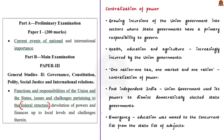For the past few years there have been growing incursions of the union government into sectors where the state governments have a primary responsibility to govern — for example, sectors like health, education and agriculture. Ideologies like 'one nation, one tax and one market' have all favored such centralization of power.